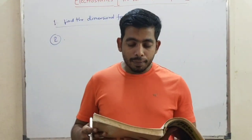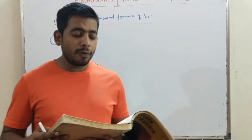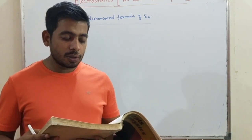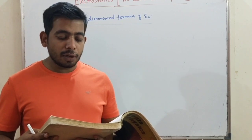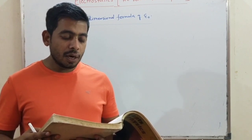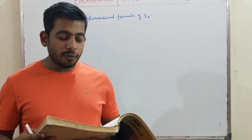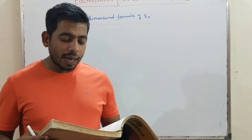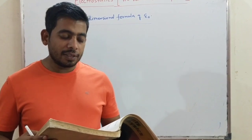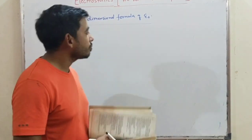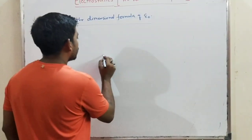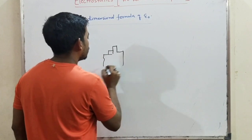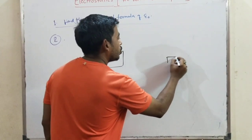A charge of 1 coulomb is placed at the top of your college building and another equal charge at the top of your house. Take the separation between the two charges to be 2 km. Find the force exerted by the charges on each other, and how many times of your weight is this force. So you have a college building and a small house.